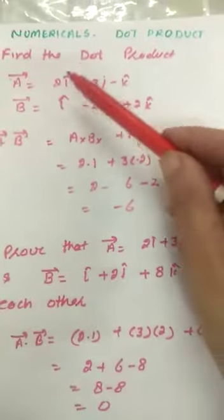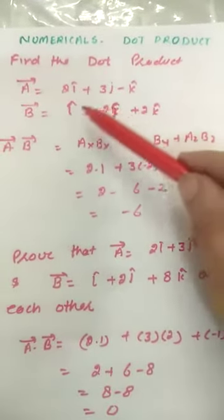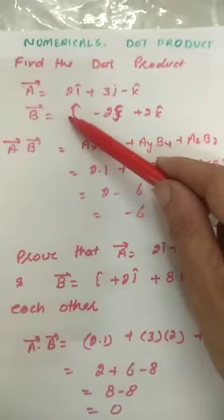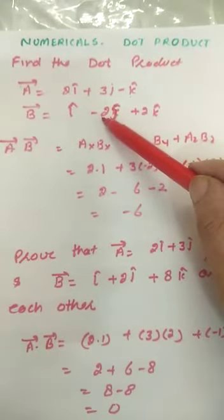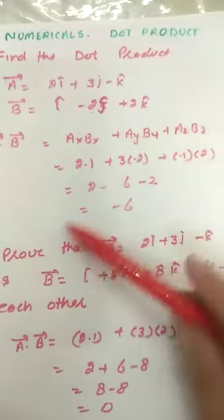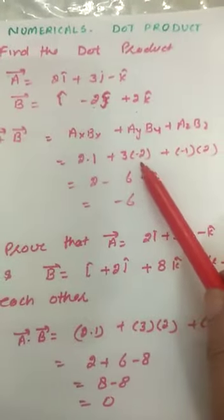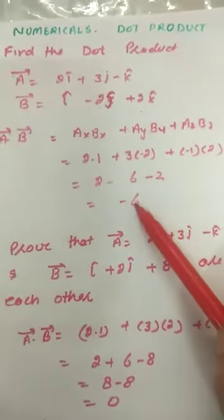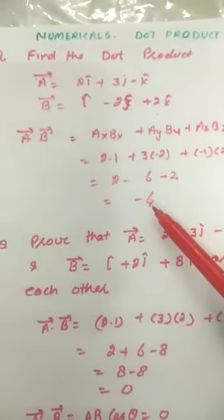Here ax is 2, ay is 3, az is minus 1. And bx is 1 (the multiple of i cap), by is minus 2 (the multiple of j cap), and bz is 2 (the multiple of k cap). Putting in the values: 2×1 plus 3×(minus 2) plus (minus 1)×2, which comes out to be minus 6. So the dot product of these two vectors is minus 6.